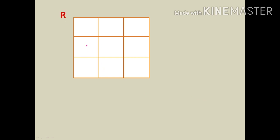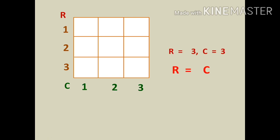Next, let's see another image. Count the number of rows and columns, then write the numbers in the series. In this image rows and columns are both 3 — they are equal. So we square 1, 2, and 3 and add: 1 + 4 + 9 = 14. The total number of squares in this image is 14.